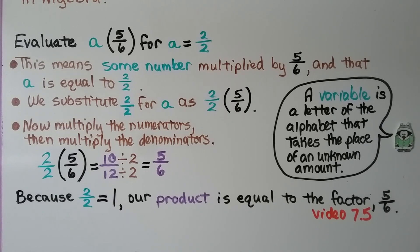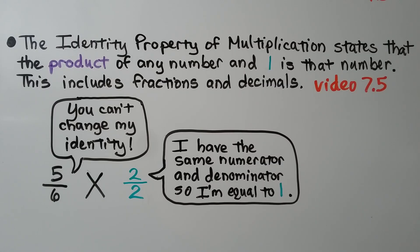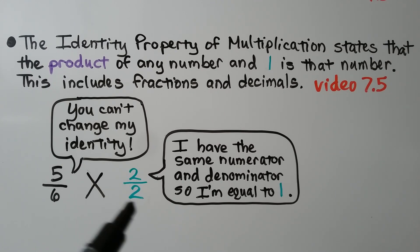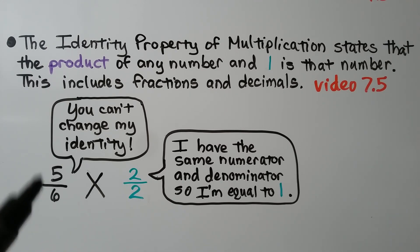Because 2 halves has the same numerator and denominator, it's equal to 1, so our product is equal to the factor 5 sixths. We learned that in the last video, 7.5. The identity property of multiplication states that the product of any number and 1 is that number — this includes fractions and decimals. So this 2 halves, having the same numerator and denominator, is equal to 1 and cannot change the identity of 5 sixths. The product will be 5 sixths.